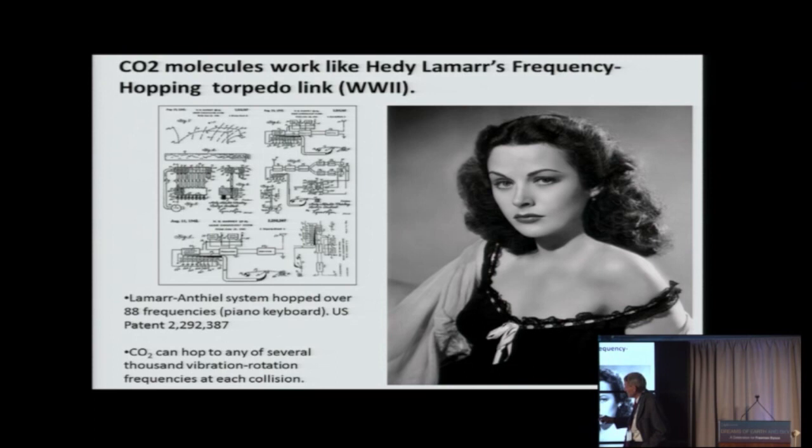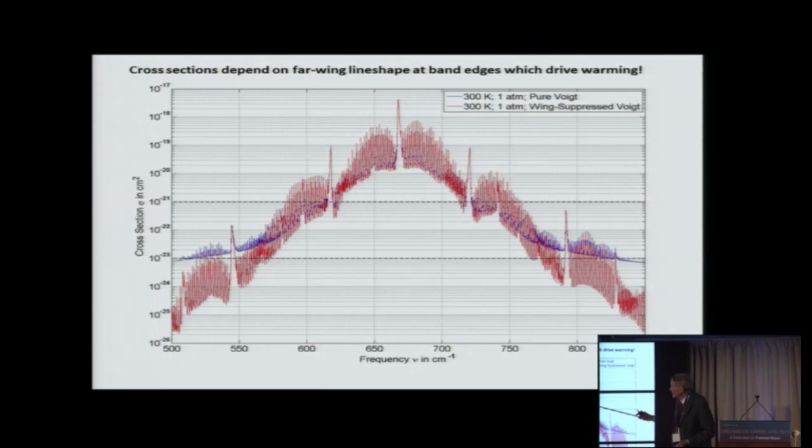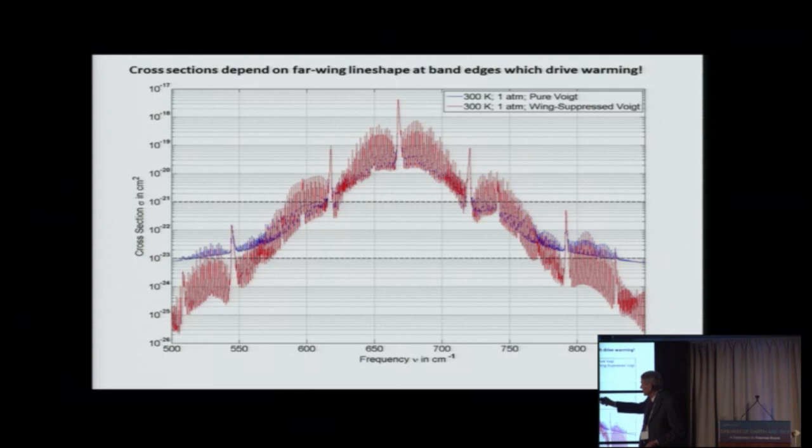But the idea was this is one of the first spread spectrum proposals that I know of. But they were going to communicate acoustically through the water. And so they had 88 frequencies, which is the number of keys, white and black on a piano keyboard. And so you would send out these different frequencies at random with a code, not pseudo-random. So your torpedo knew what the right code was, and you knew what the right code was. But the Germans wouldn't know what it was. So CO2 actually works just like this, you know. As it's radiating and absorbing, it's hopping from frequency to frequency. And I mentioned, here she had only 88 frequencies, but CO2 has, I think I mentioned here, there are roughly 4000 frequencies. So at every collision, CO2 jumps from radiating at this frequency to this frequency to this frequency. It's hopping around in frequency space.